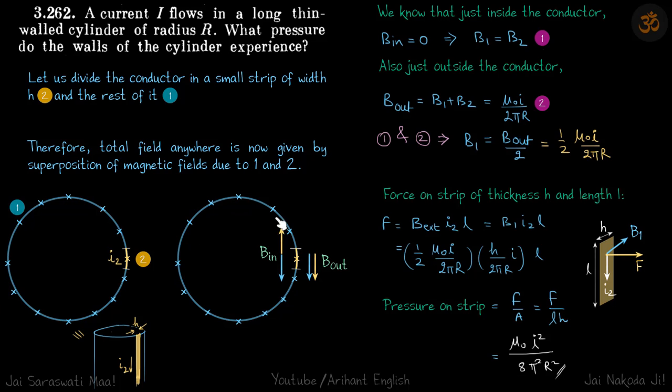Inside the cylinder total field is 0, and outside the cylinder field is μ₀I/(2πr). Inside it is 0, so we know that just inside the conductor B_in = 0, which implies B₁ = B₂. Let's call this blue part as 1 and the small strip as 2.